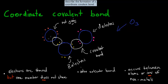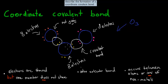So now this one has 8 electrons, and this one also has 8 electrons. It didn't get any electrons from the other one, so it still has its 8. Now each of them has 8 electrons, and that's the idea of a coordinate covalent bond.